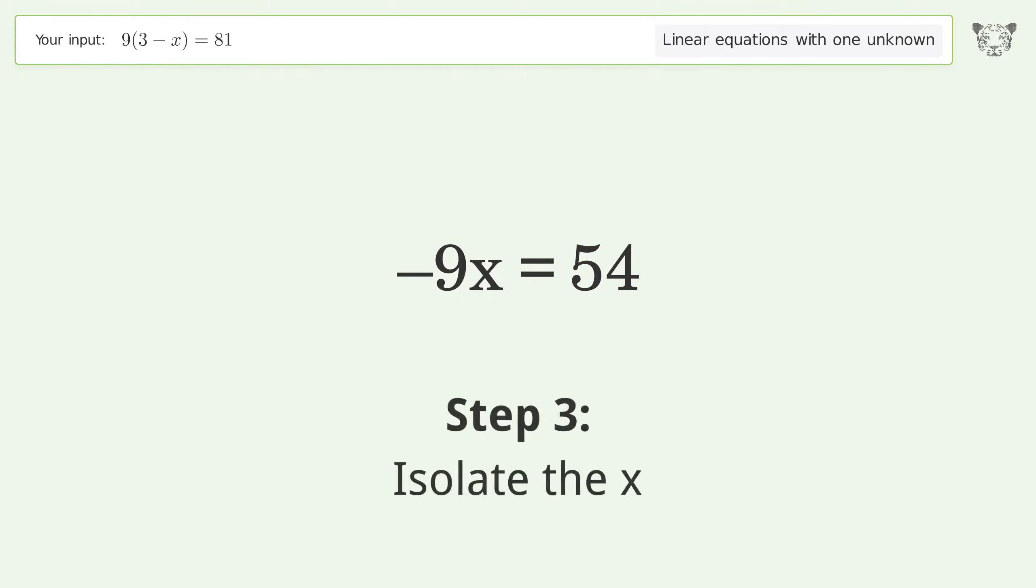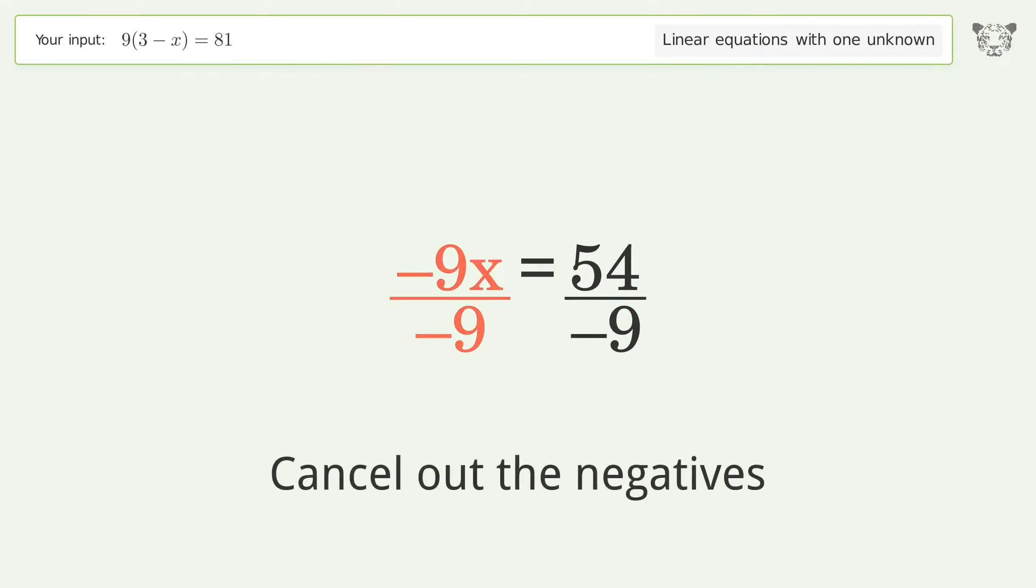Isolate the x. Divide both sides by negative 9. Cancel out the negatives. Simplify the fraction.